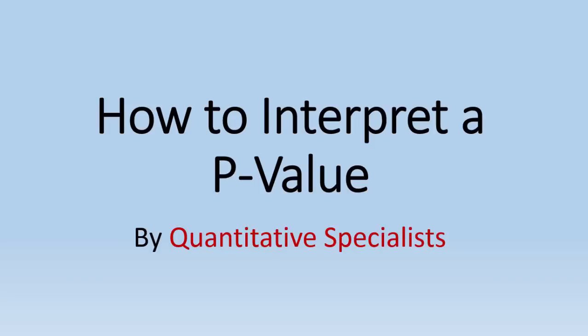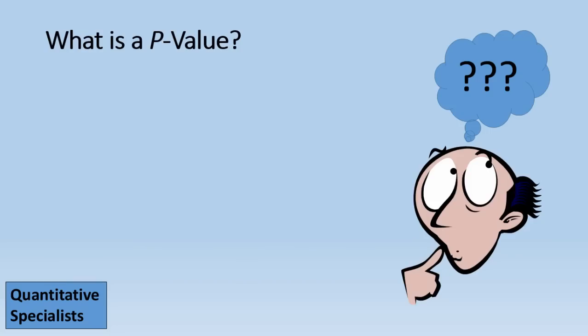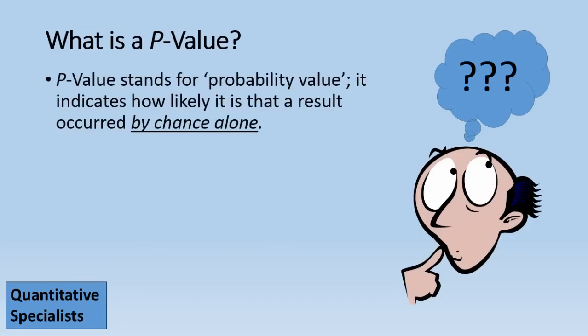In this video, we'll take a look at how to interpret a p-value. So what is a p-value? P-value stands for probability value. It indicates how likely it is that a result occurred by chance alone.